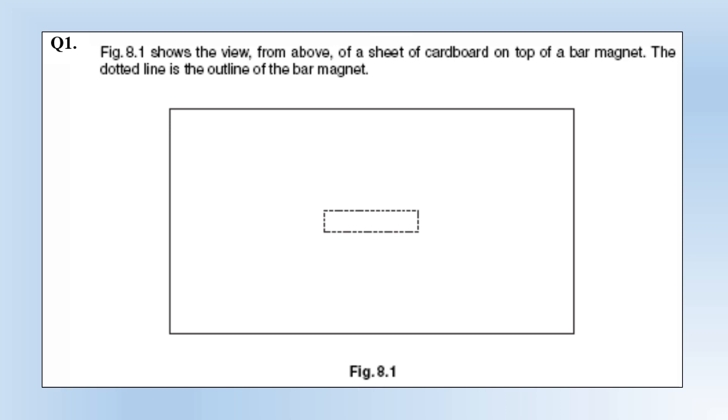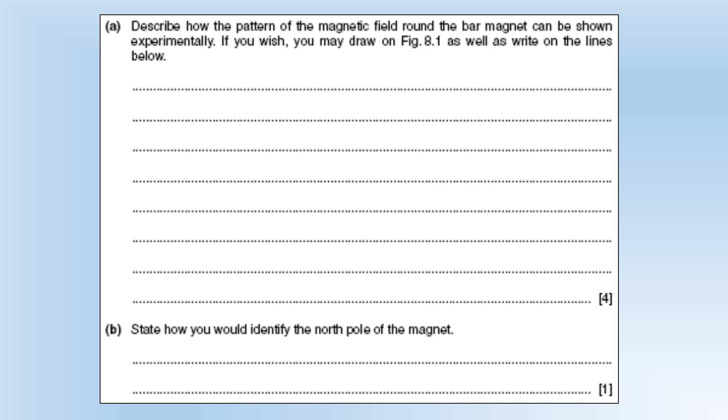Okay, so we're going to look at some exam style questions on electricity and magnetism, starting off with some magnetism. The diagram shows the view from above of a sheet of cardboard on top of a bar magnet. The dotted outline shows the outline of the bar magnet which is underneath the card. Describe how the pattern of a magnetic field around the bar magnet can be shown experimentally. You may wish to draw on the diagram as well as write on the lines below.